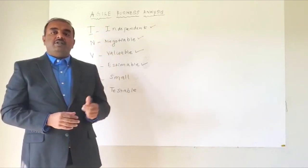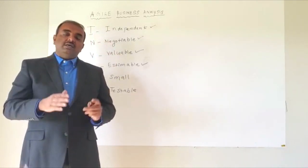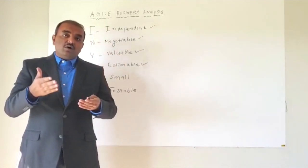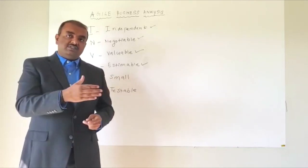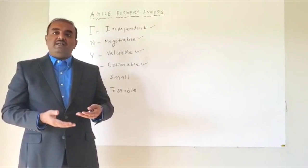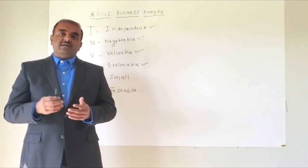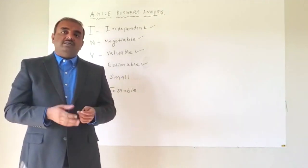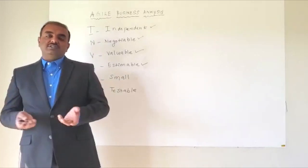Similar to that, in the product backlog, when you have different stories, those stories that are to be worked upon in the next couple of sprints need to be smaller enough. But those stories that are having low priority can be bigger enough so that when it comes to the sprint, you can always break those bigger stories into smaller stories.